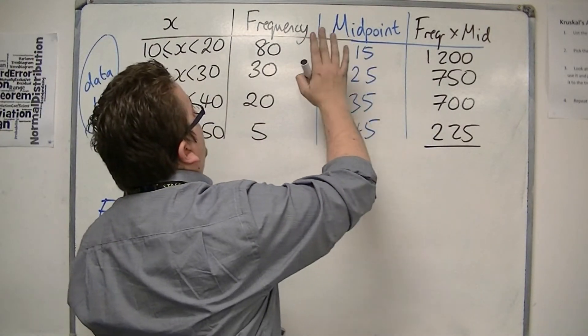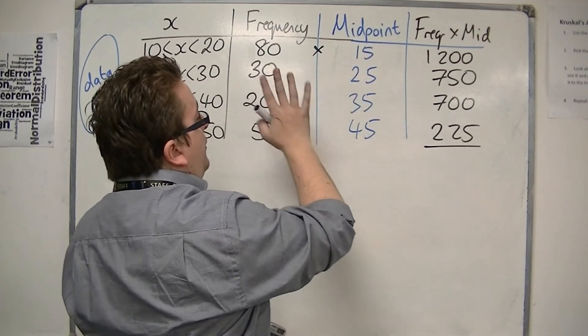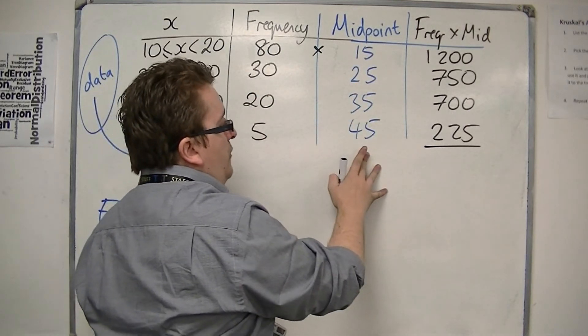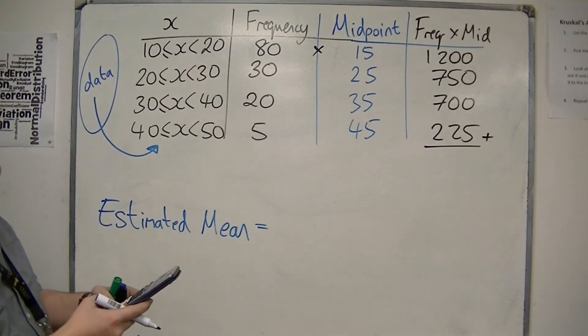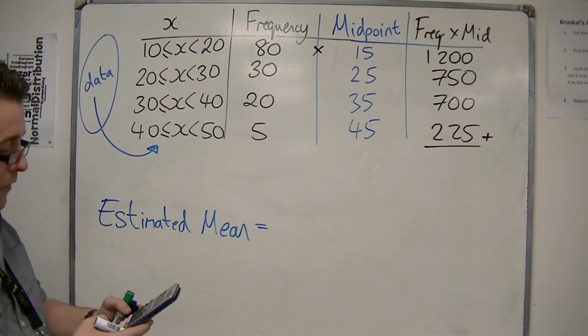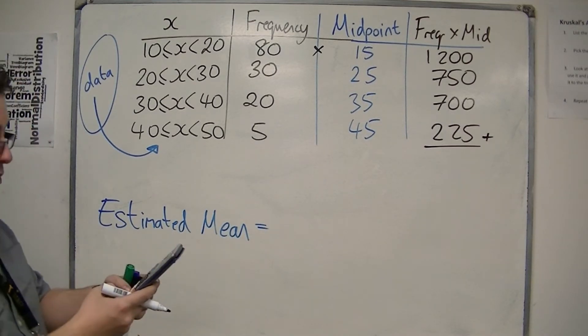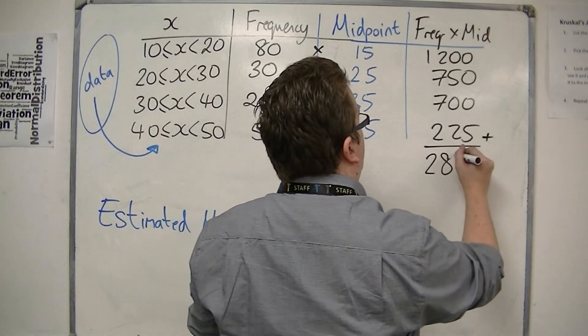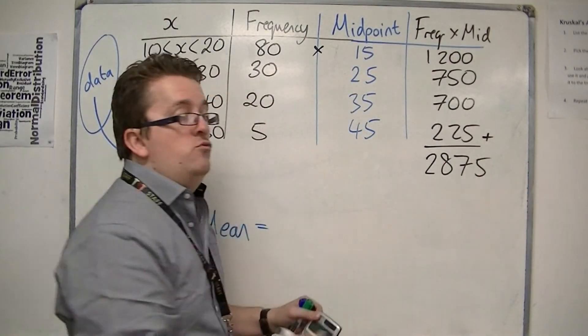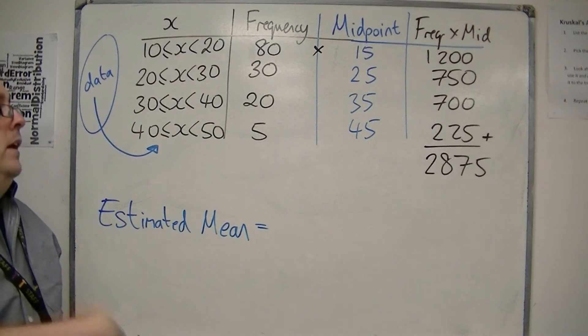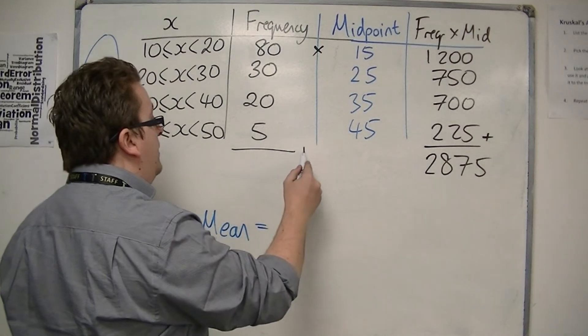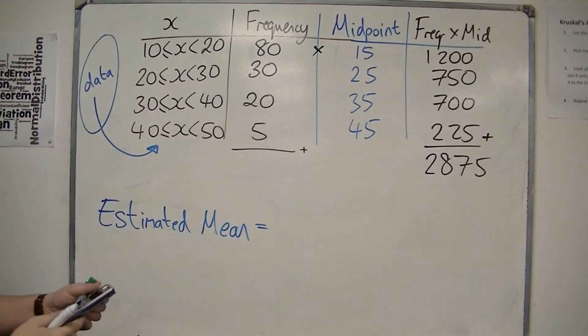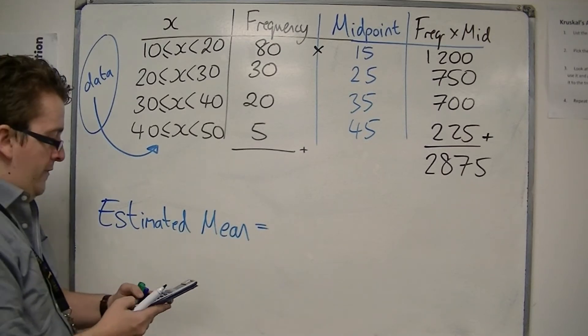So I know I've got 80 15s, 30 25s, 20 35s, and 5 45s. And then I'm going to add that column together. So I can say that an estimate of what all these numbers add up to would be 2875. So this is really an estimated sum, an estimated total. I definitely know how many numbers I had. And I'm going to need to add that up. So I've got 80 plus 30 plus 20 plus 5 is 135.